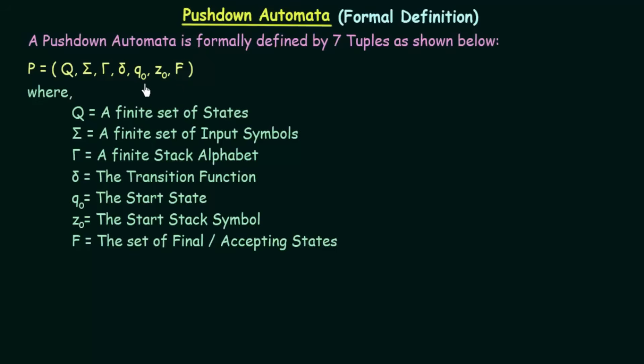Let's see what these tuples mean. Q is a finite set of states — this is the same as in finite automata where Q represents a set of states. Sigma is a finite set of input symbols, also the same as in finite automata.